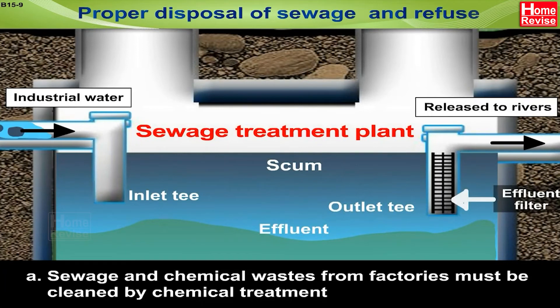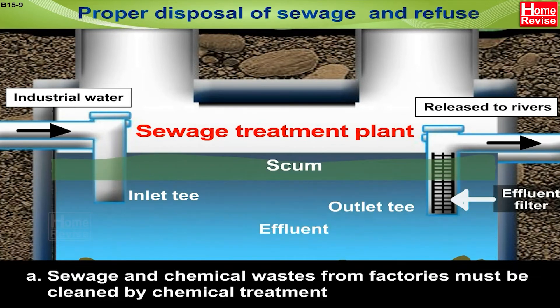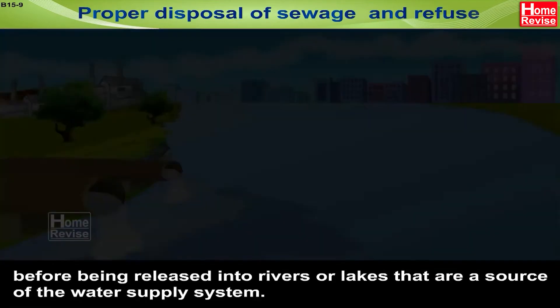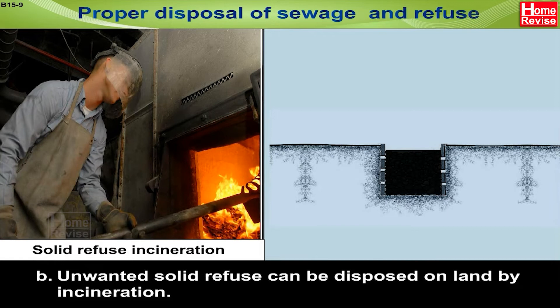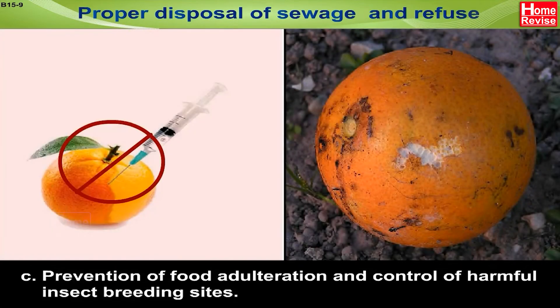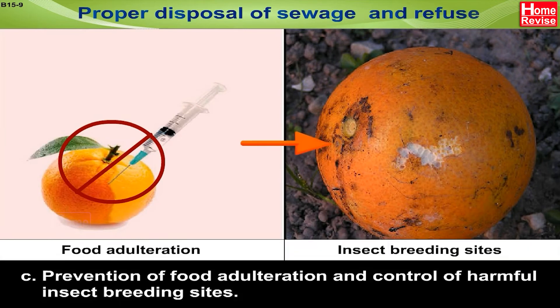Proper disposal of sewage and refuse: sewage and chemical waste from factories must be cleaned by chemical treatment before being released into rivers or lakes that are a source of the water supply system. Unwanted solid refuse can be disposed on land by incineration. Prevention of food adulteration and control of harmful insect breeding sites are also essential measures.